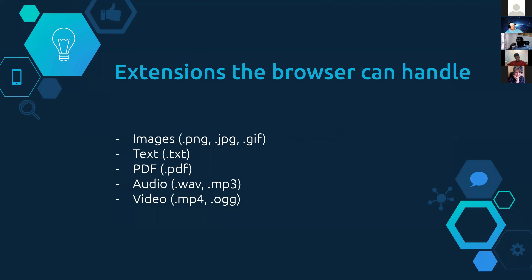So we kind of talked about this again — what extensions browsers can handle. Obviously HTML is what they handle the most, but images such as PNG, JPEG, and GIF — however you want to say it — they can also render text, PDFs, audio, and video files of varying formats. These are just a couple of them. Audios and videos you can load directly in the audio or video tag, but you can also browse to your file on your computer and play them.